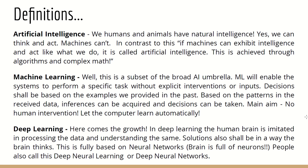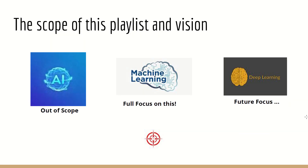What is deep learning? In deep learning, the human brain is imitated in the processing. The data and understanding of data shall be done as the human brain does — the system should think as you think. Solutions are naturally based on neurons; the brain is all about neurons and neural networks. The purpose of deep learning is to make the system decide and think like the human brain, which is why people also call it deep neural learning or deep neural networks.